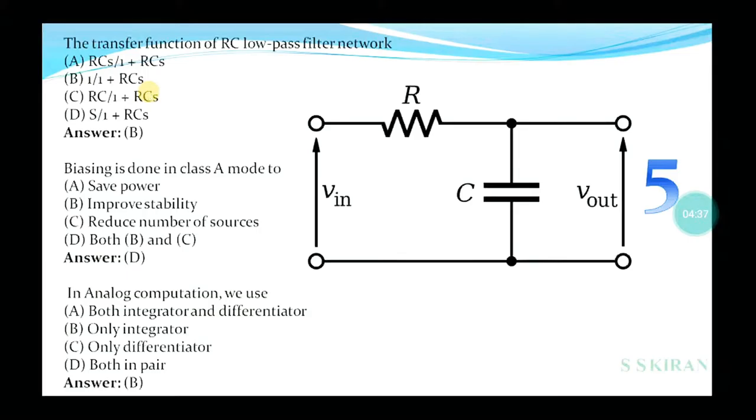The transfer function of RC low pass filter network: RC/(1+RC), 1/(1+RC), RC/(1+RCs), or S/(1+RC)? The option is B, 1/(1+RCs). This is the transfer function of the low pass RC network. See the diagram also—see the answer, 1/(1+RCs).